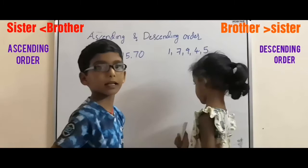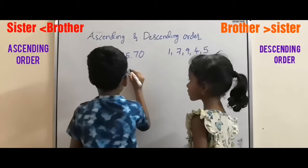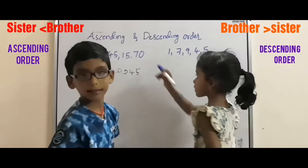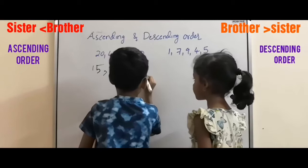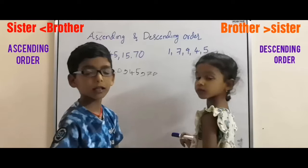Then the next bigger number is 20. Next bigger number is 45. Next bigger number is 70. This is called ascending order.